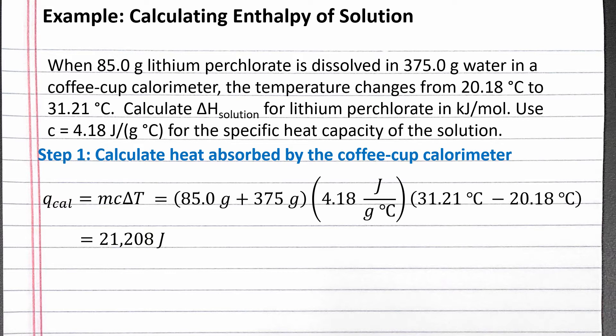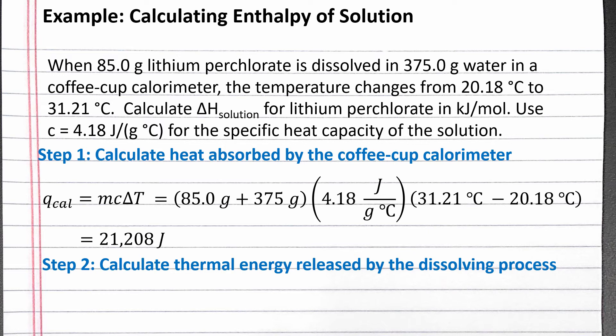Our next step is to calculate the thermal energy released by the dissolving process. We know the dissolving process releases thermal energy because when an ionic solid is dissolved in water and the temperature increases, the dissolving process is exothermic. The temperature is increasing because thermal energy is being released by the dissolving process, similar to a combustion reaction releasing thermal energy and the temperature of the gases increasing. So the energy released by the dissolving process has the opposite sign of the energy absorbed by the calorimeter's contents. Q solution should equal negative 21,208 joules.